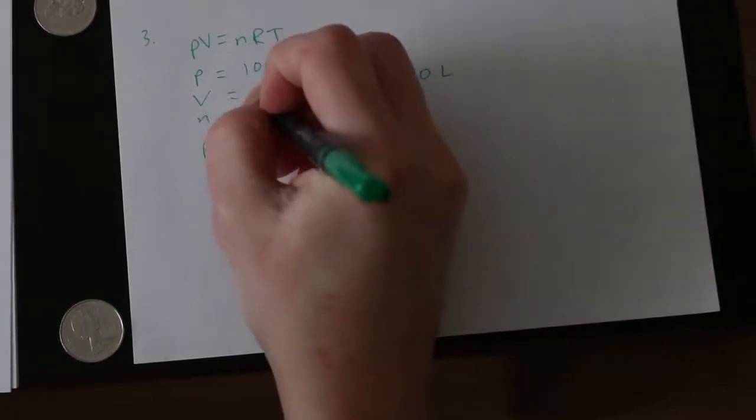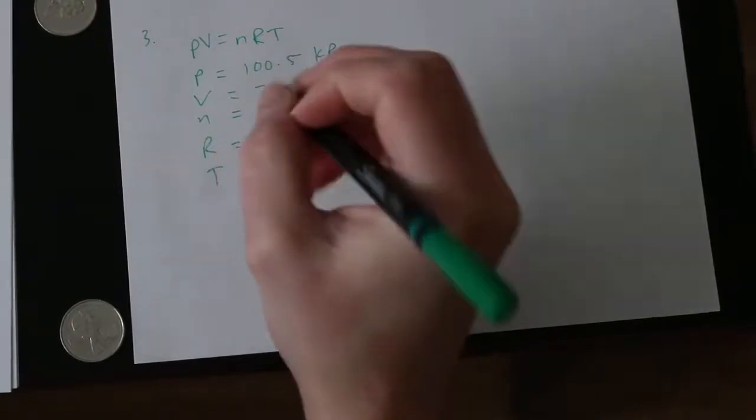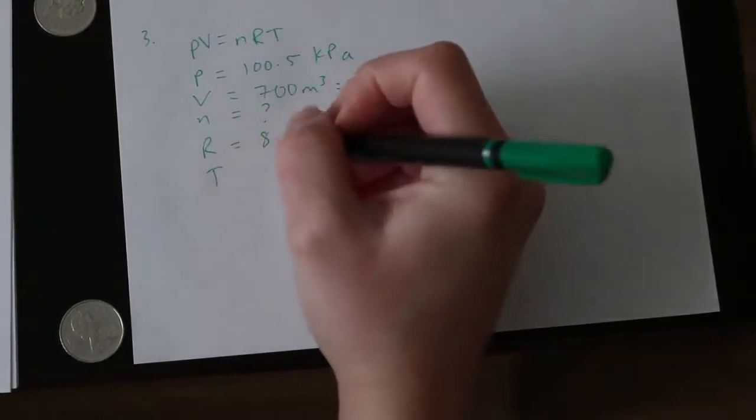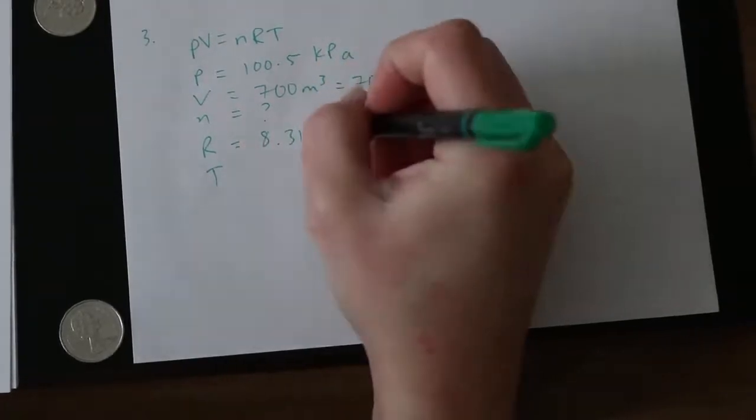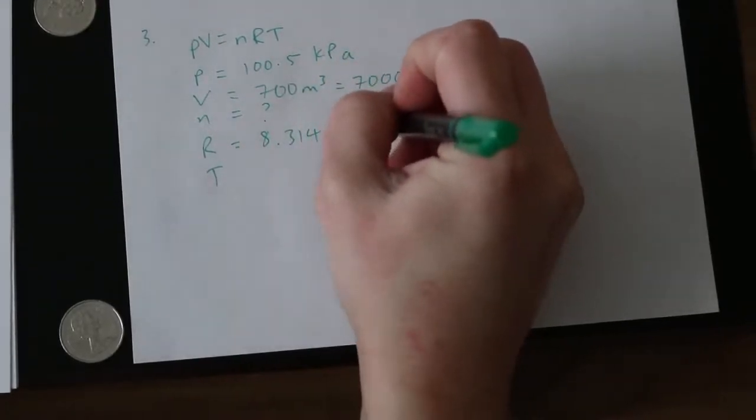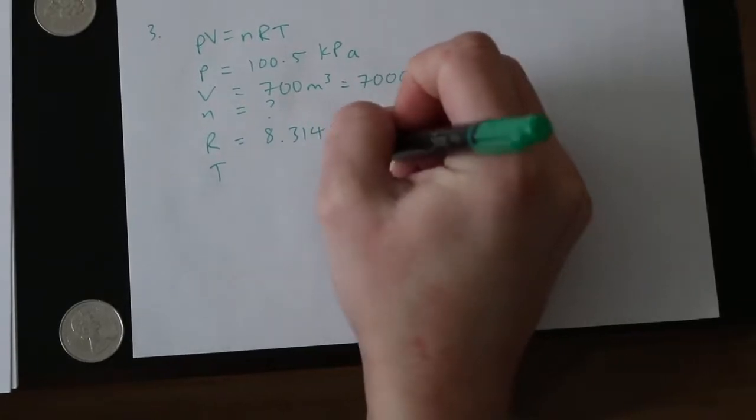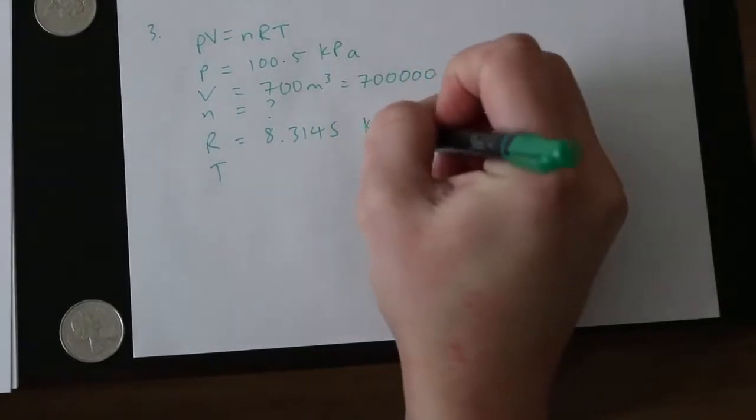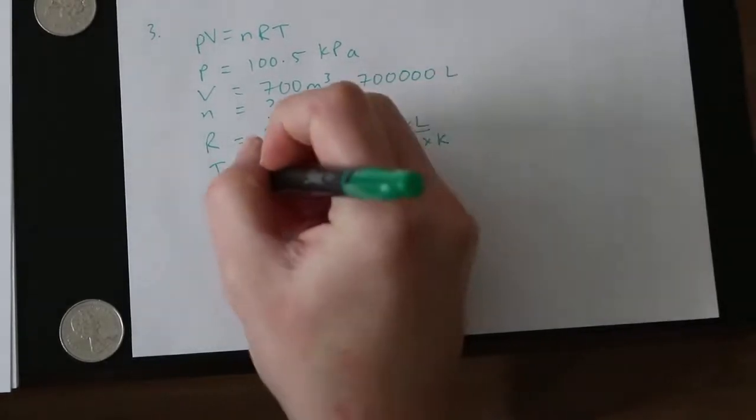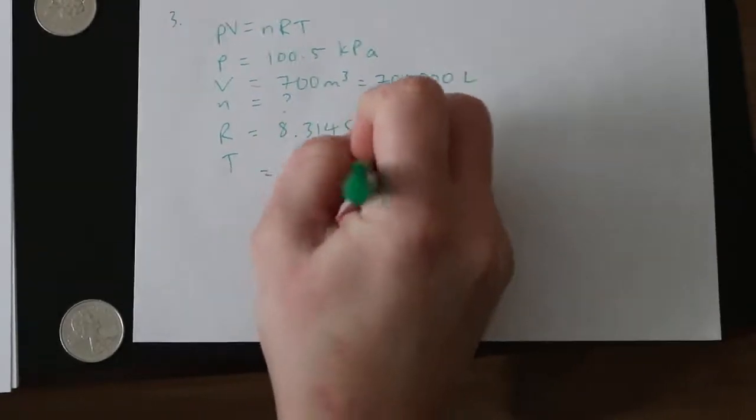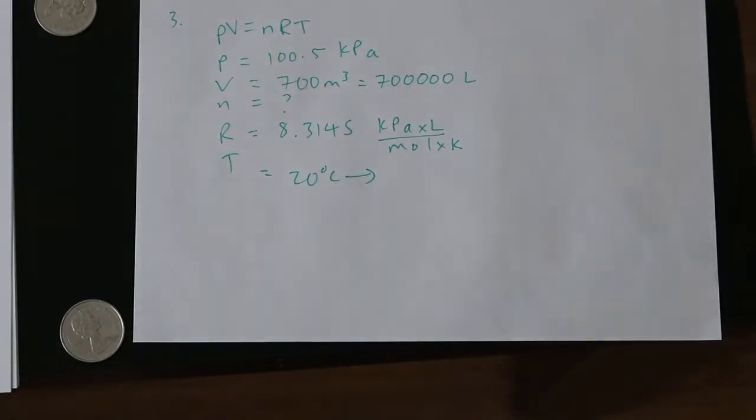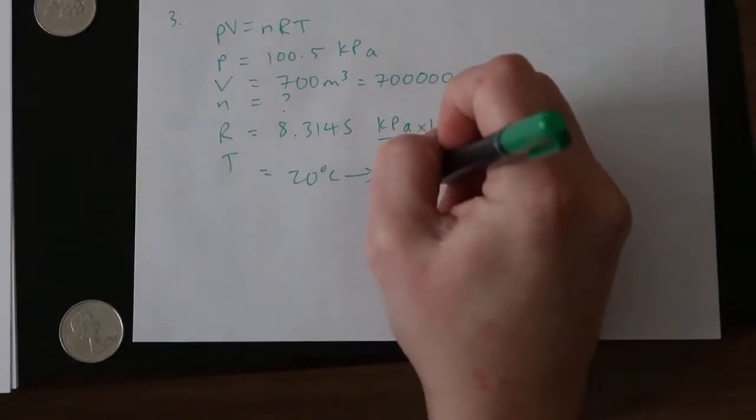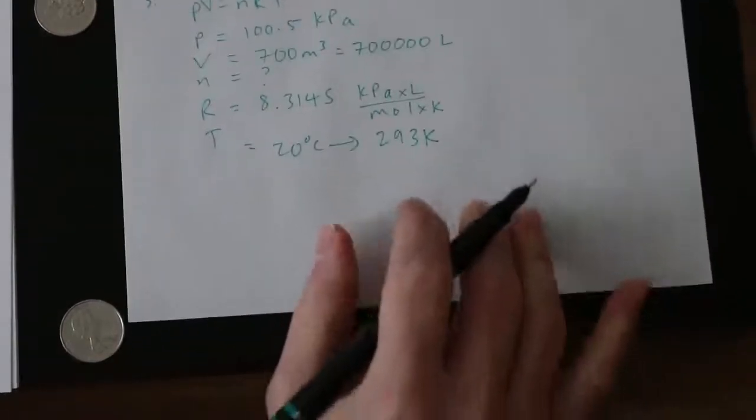Our number of moles is what we're trying to find. We're going to use the 8.3145 constant. And remember the units of that is kilopascals times liter divided by moles times Kelvin. And the temperature is given as 20 degrees Celsius. We have to have that in Kelvin, remember. So 20 plus 273 is going to give us 293 Kelvin.